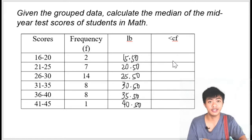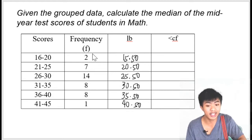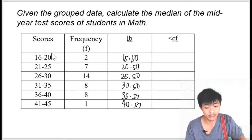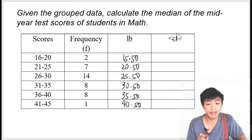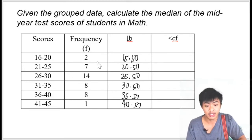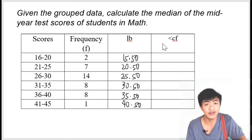Now let's go to the less cumulative frequency. Yung less cumulative frequency na to is that we're going to just add the frequencies. Less cumulative frequency, magsisimula tayo mag-add from the lowest interval. Basta less cumulative frequency, we will be adding the frequency starting from the lowest class interval. Meron kasi tayong tinatawag na greater cumulative frequency kung saan magsisimula kang mag-add from the frequency of the highest interval. So yung kailangan natin dito is yung less cumulative frequency.